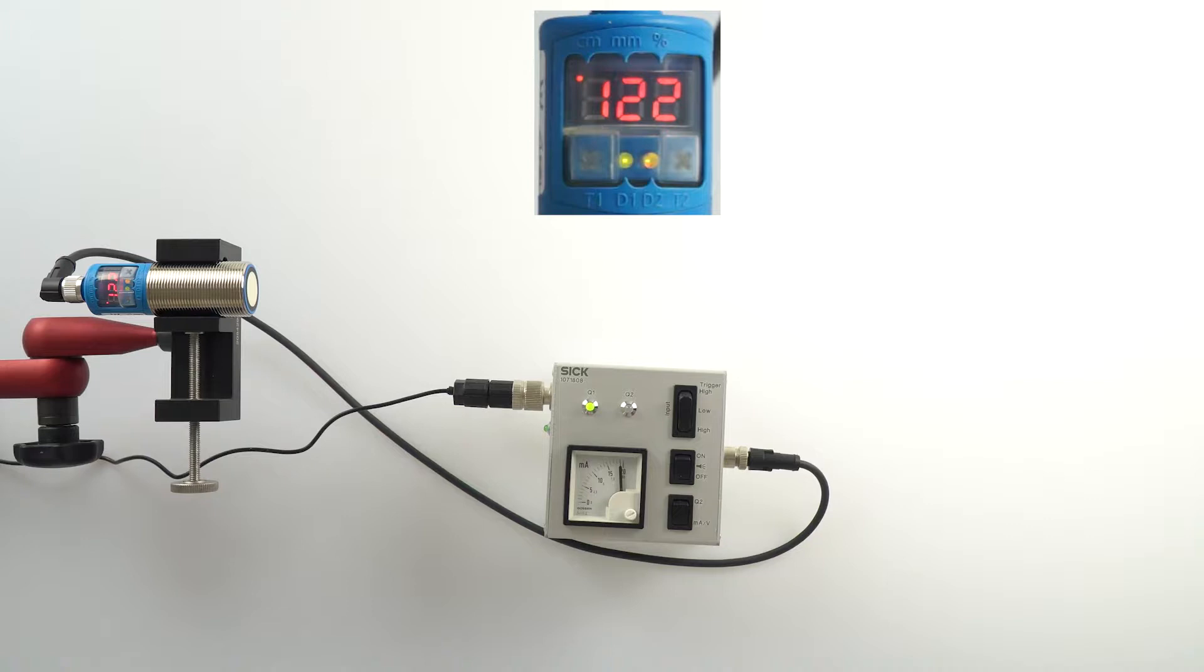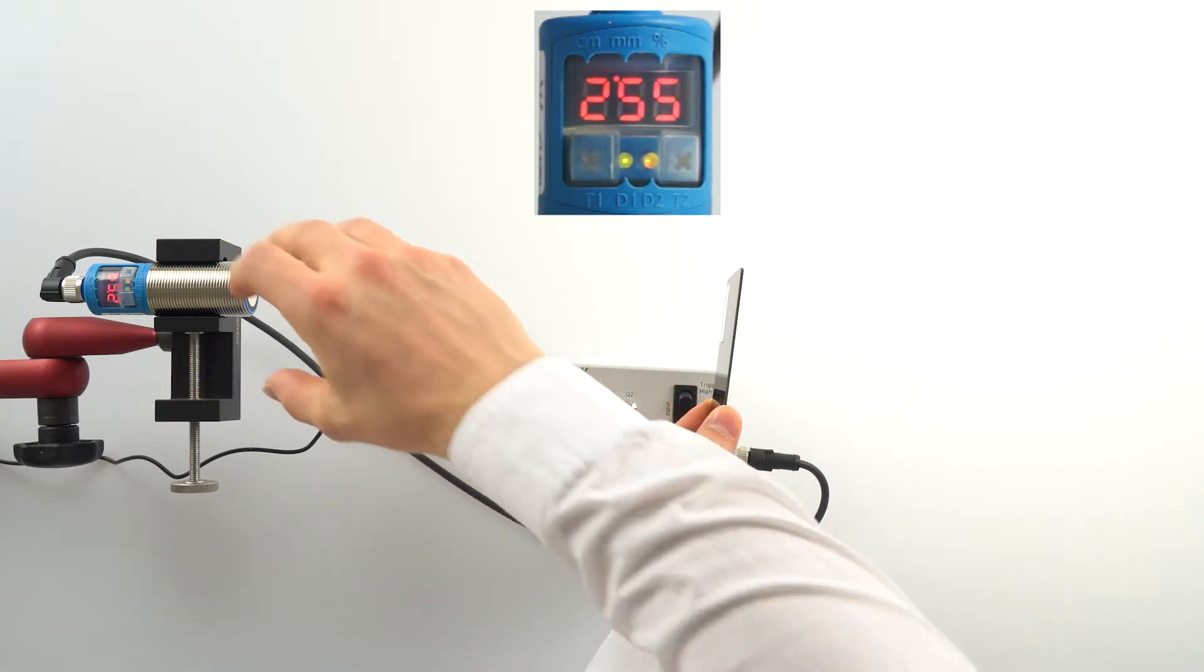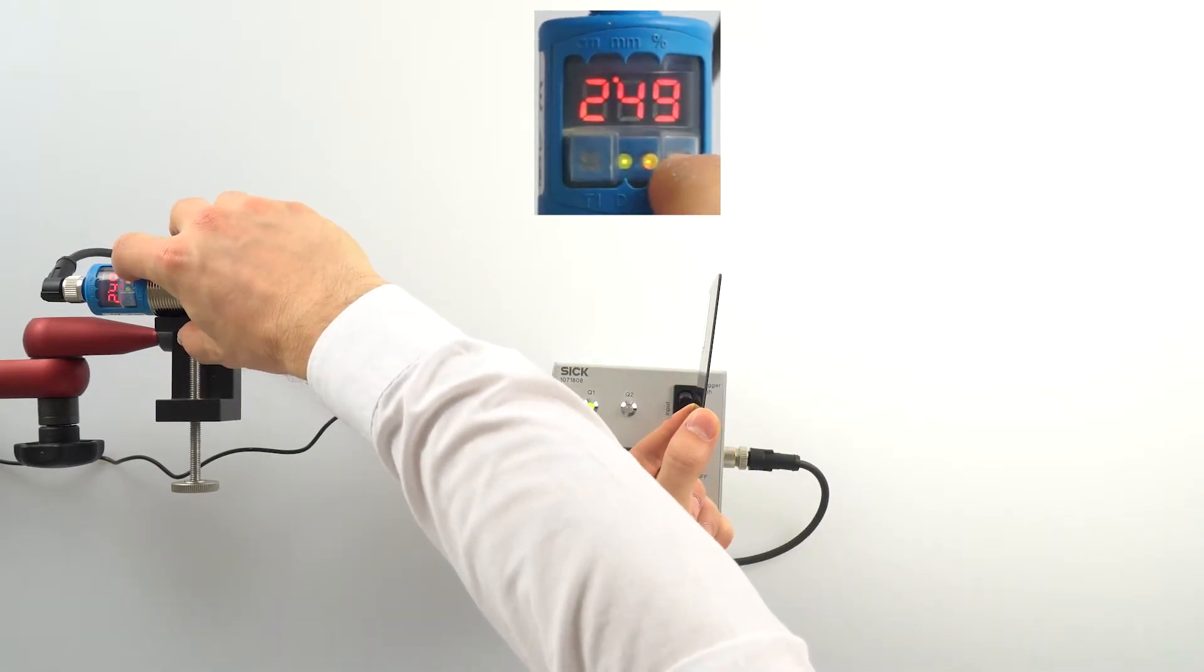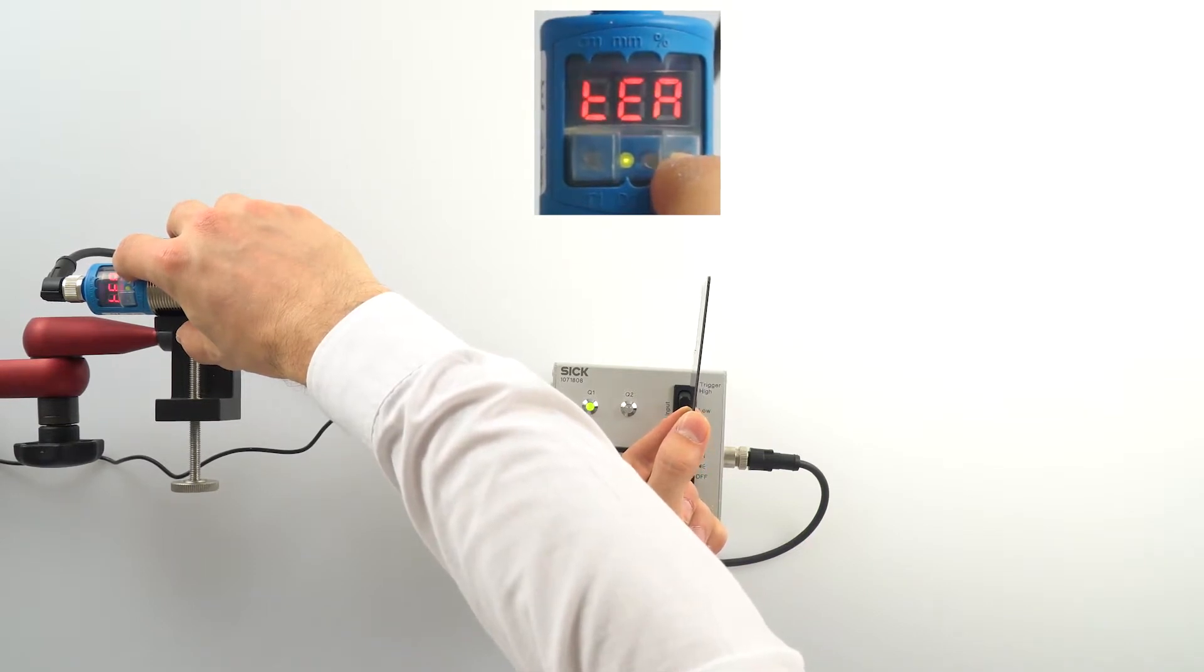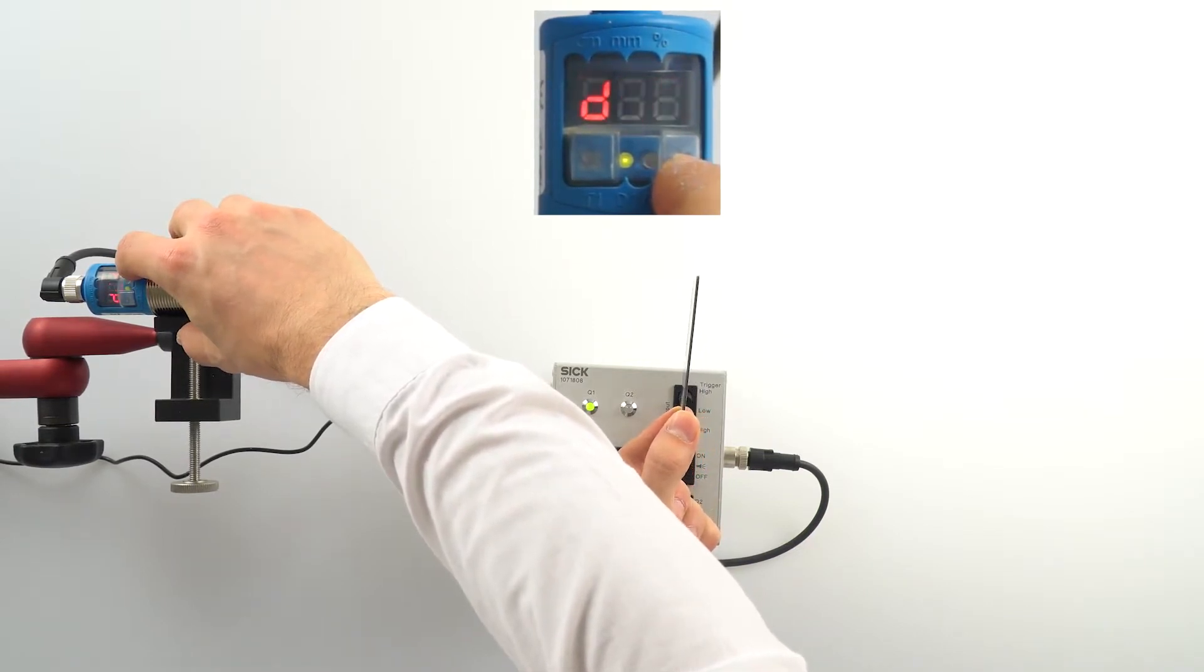Position any ultrasonic reflecting object, such as a business card, in front of the sensor at the desired distance for the limit switching point. Then press the T2 key until D appears in the display. The sensor is then showing the current measurement value.